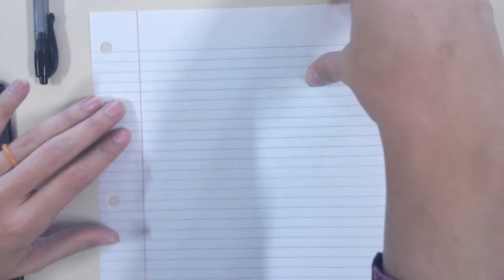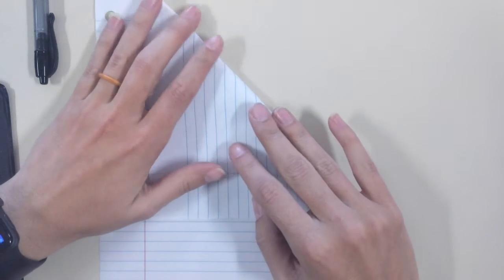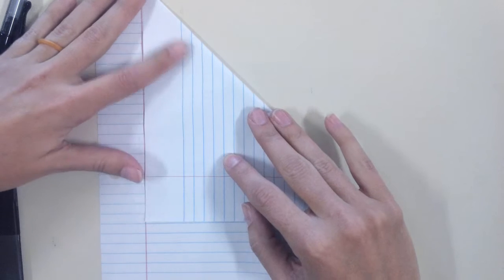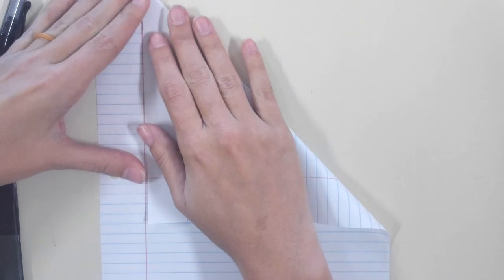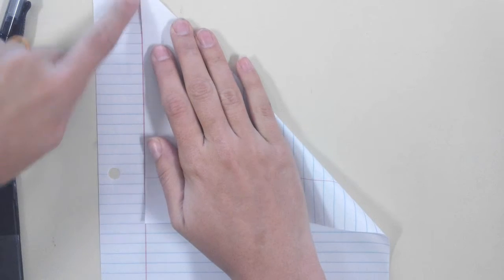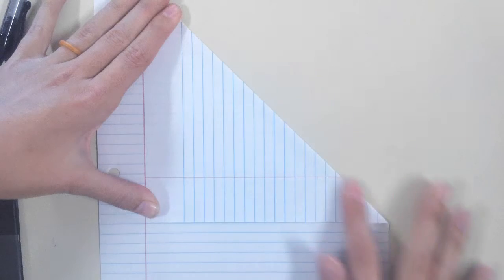If you have a rectangular piece of paper, you can create a square by creating two triangles, two right triangles. I'm going to use this pink line here because I don't want the holes. And then if you just cut this off, you've got a square.